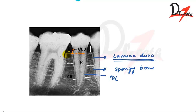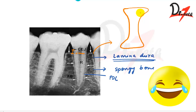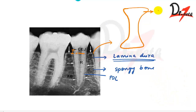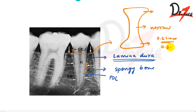If I draw the periodontal ligament space, it has an hourglass shape — broadest at the periphery and narrowest at the mid-root level. The width of the periodontal ligament is approximately 0.25 mm, with a range of 0.2 to 0.4 mm. This space allows forces from any direction to be distributed.